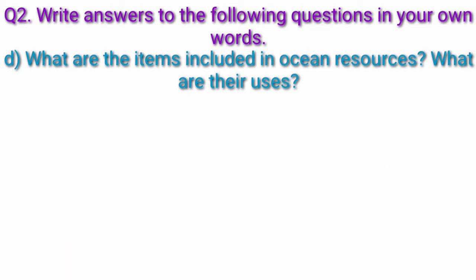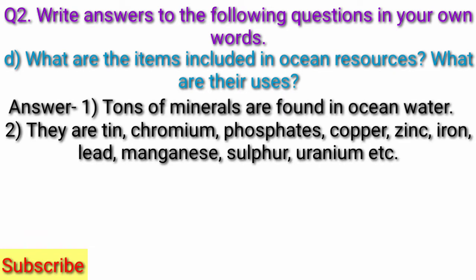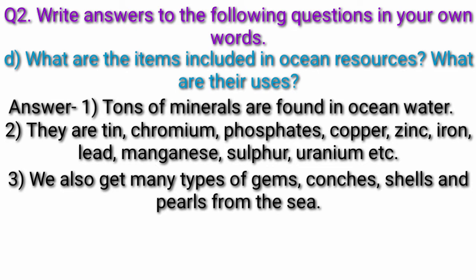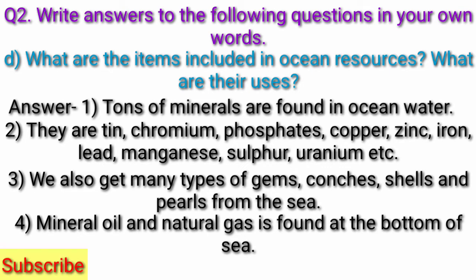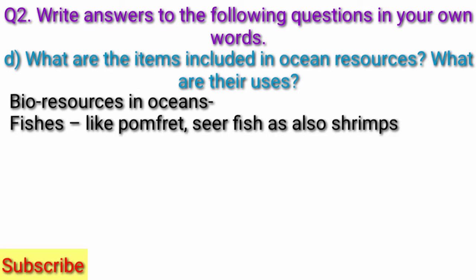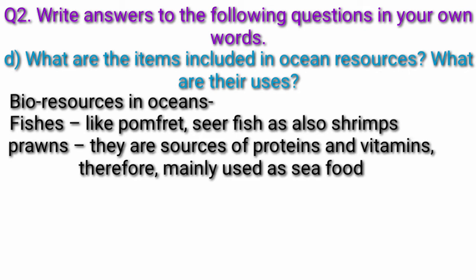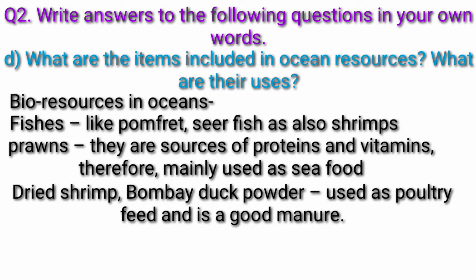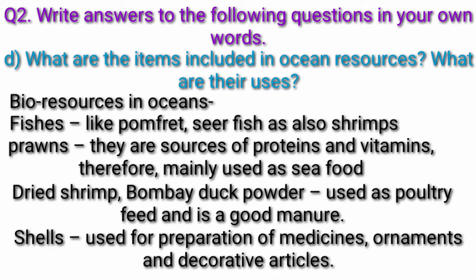Question d) What are the items included in ocean resources? What are their uses? Answer: Tons of minerals are found in ocean water — tin, chromium, phosphates, copper, zinc, iron, lead, magnesium, sulfur, uranium, etc. We also get conches, shells, and pearls from the sea. Mineral oil and natural gas are found at the bottom of the sea. Bio resources in oceans include fishes like pomfret, as well as shrimps and prawns, which are sources of proteins and vitamins and mainly used as seafood. Dried shrimp powder is used as poultry feed and as manure.